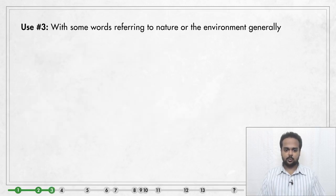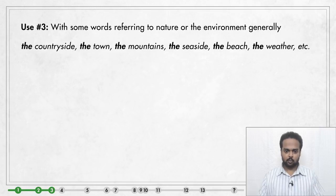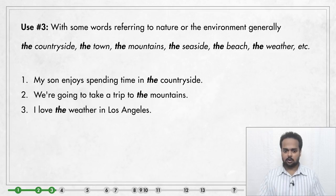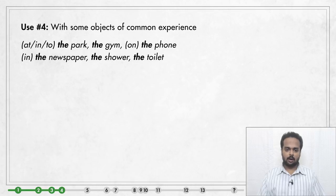The next use is with some words referring to nature or the environment in a general way — words such as 'the countryside,' 'the town,' 'the mountains,' 'the weather,' etc. For example: 'My son enjoys spending time in the countryside' means he likes to relax in rural areas. More examples: 'We're going to take a trip to the mountains' and 'I love the weather in Los Angeles.'